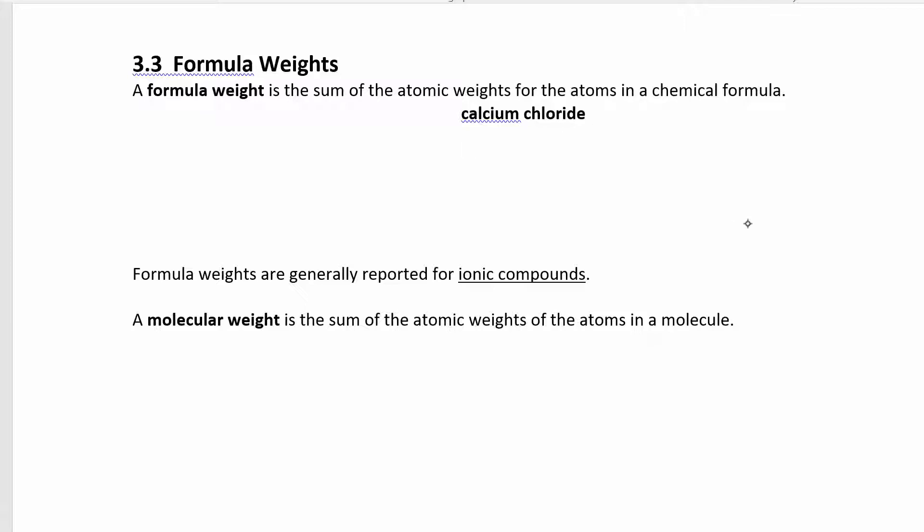Sometimes we'll give you the name, like calcium chloride, and you have to come up with the formula before you can figure out the formula weight. Calcium has a 2+ charge, the chloride ion has a -1 charge, and when you crisscross you get CaCl2.